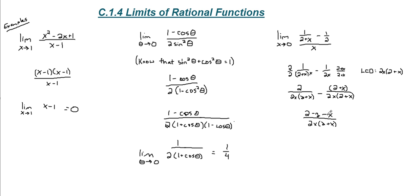Okay, and look what we have left. 2 minus 2 minus x. We're just left with a negative x in the numerator. We have 2x and the 2 plus x in the denominator. Simplify. The x and the x cancel, leaving us with negative 1 over 2 times 2 plus x.